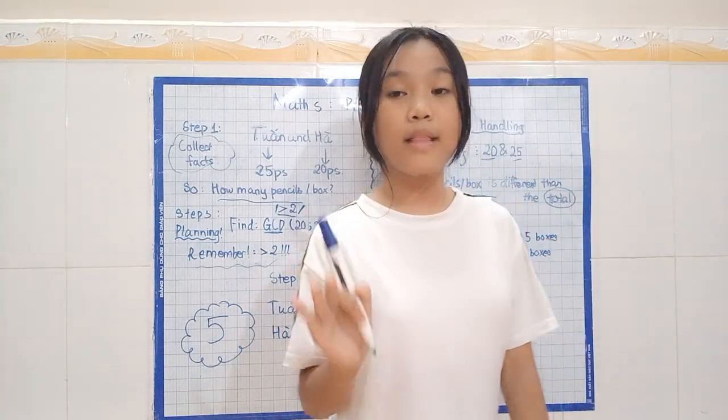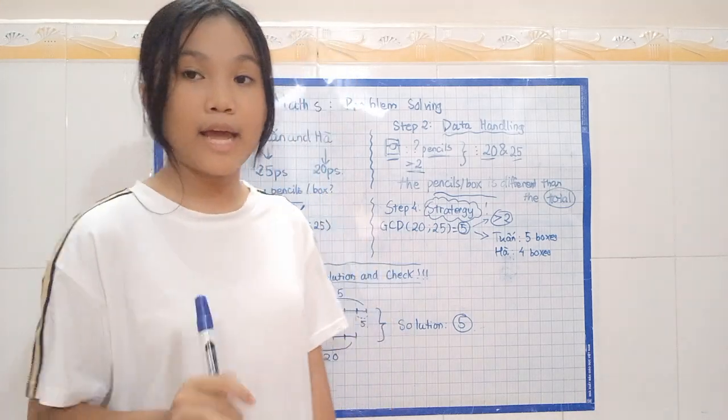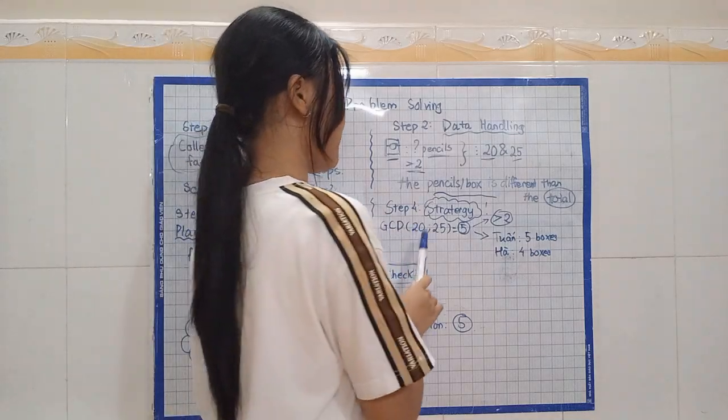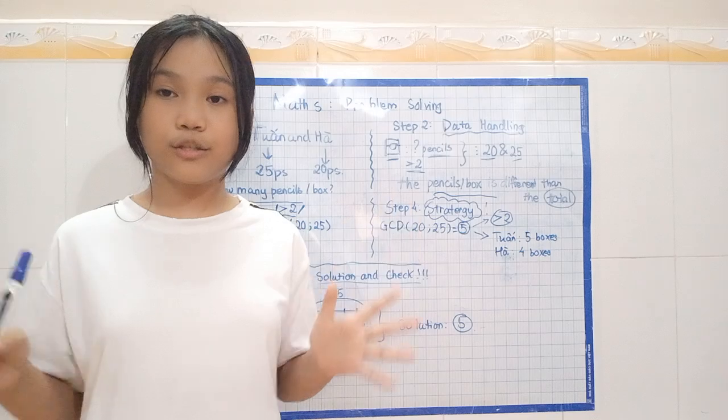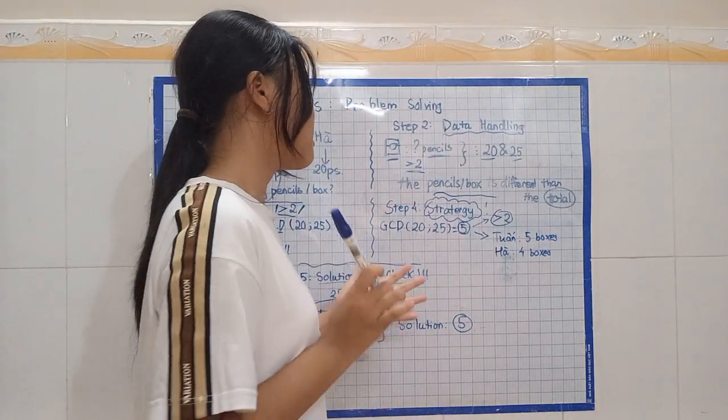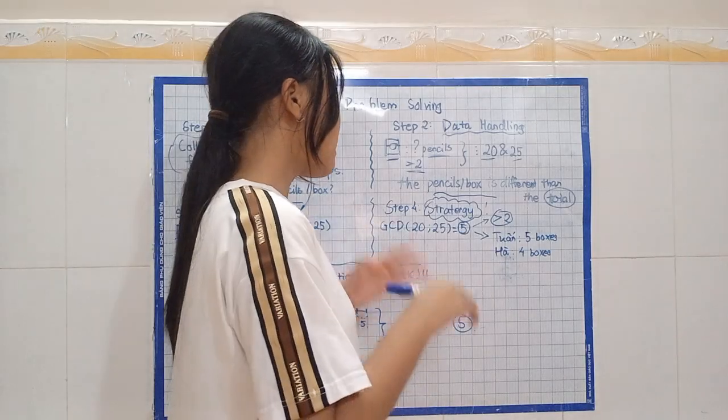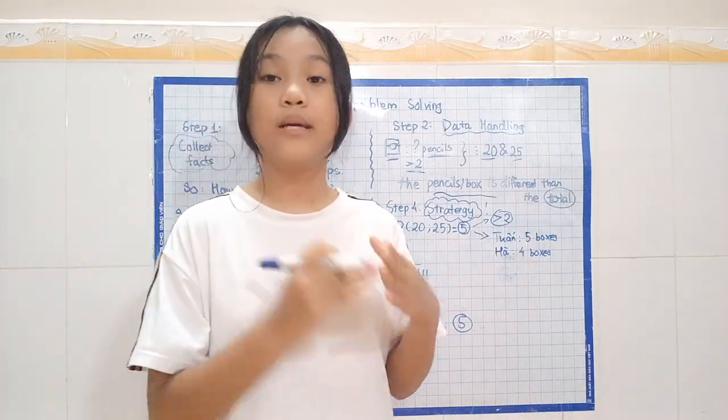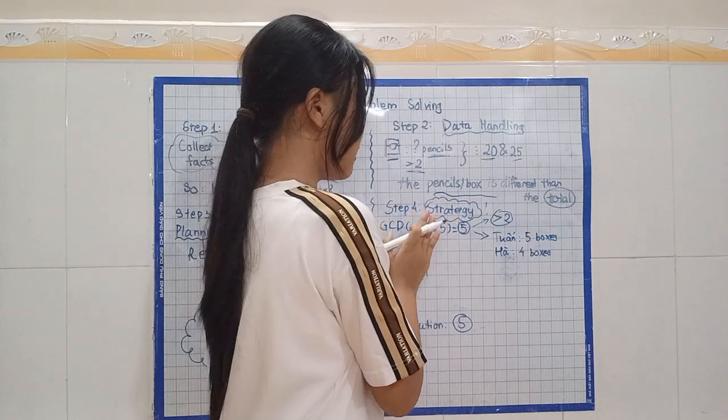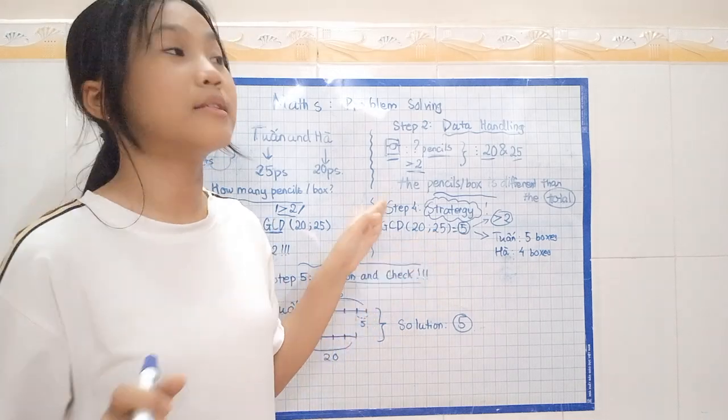For step 4, let's look at our strategy. Now, let's implement our plan. Our plan here, first is to find the GCD of 20 and 25. I used my calculations and I calculated out that the GCD, the greatest common division of 20 and 25 is 5. Why? Because they are the greatest common division.